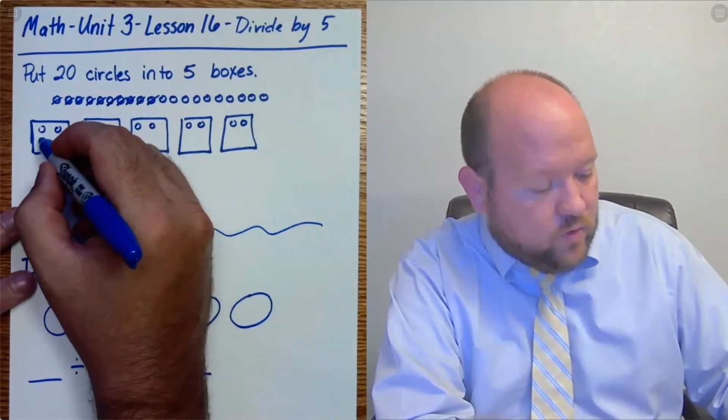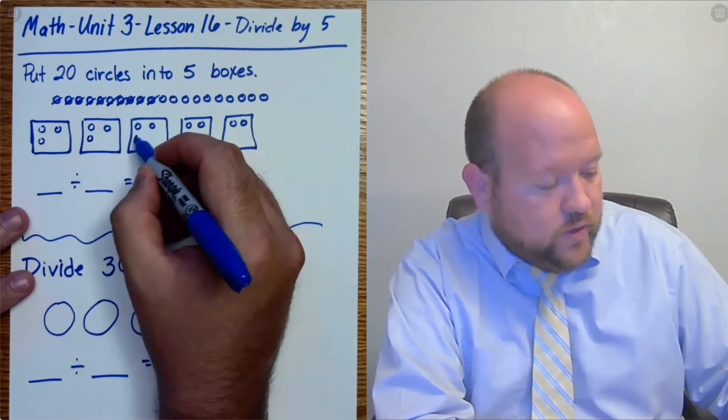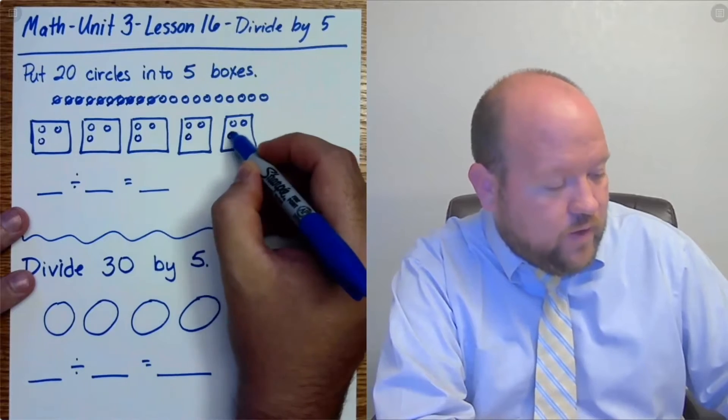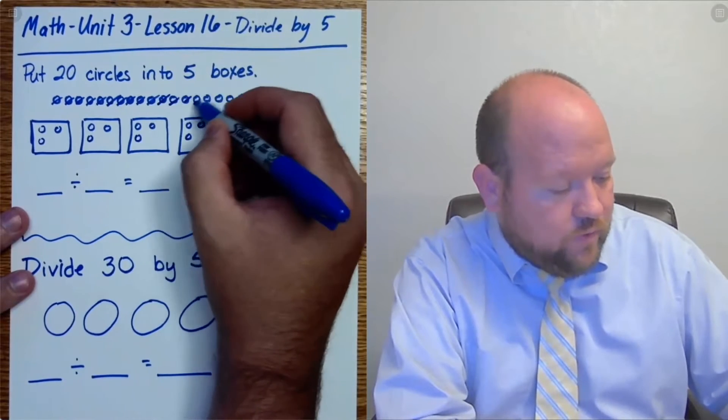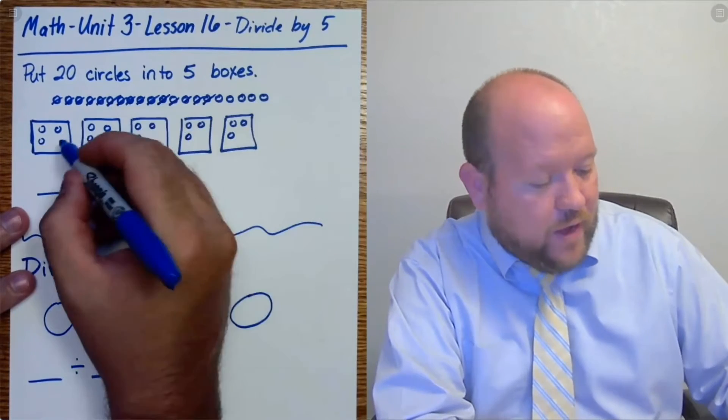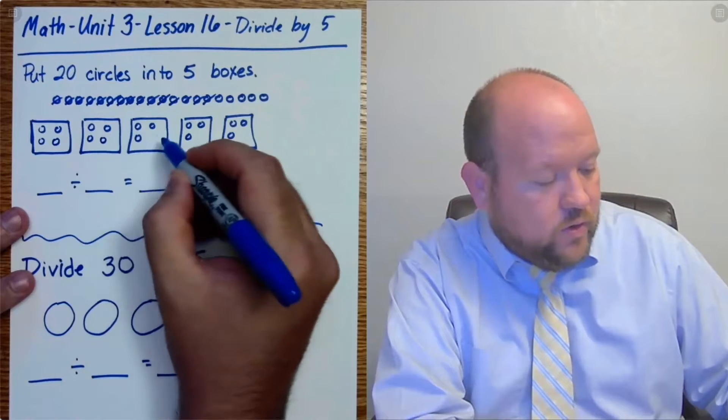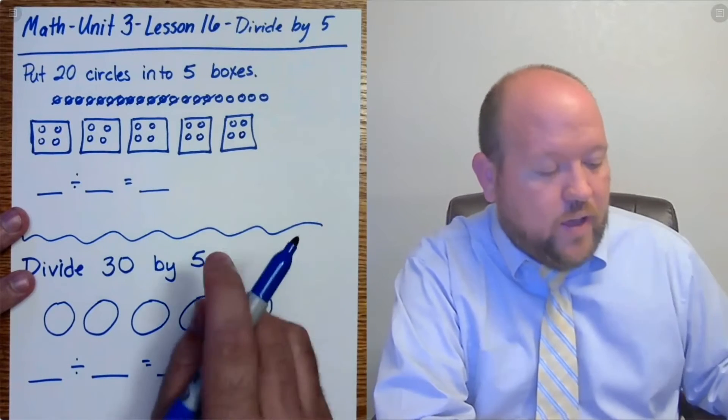I got more left. 1, 2, 3, 4, 5. 1, 2, 3, 4, 5. We have 5 left. 1, 2, 3, 4, 5.